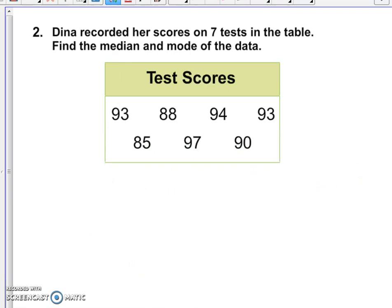Dina recorded her scores on seven tests in the table. Find the median and the mode. Again, we want to organize them from least to greatest.